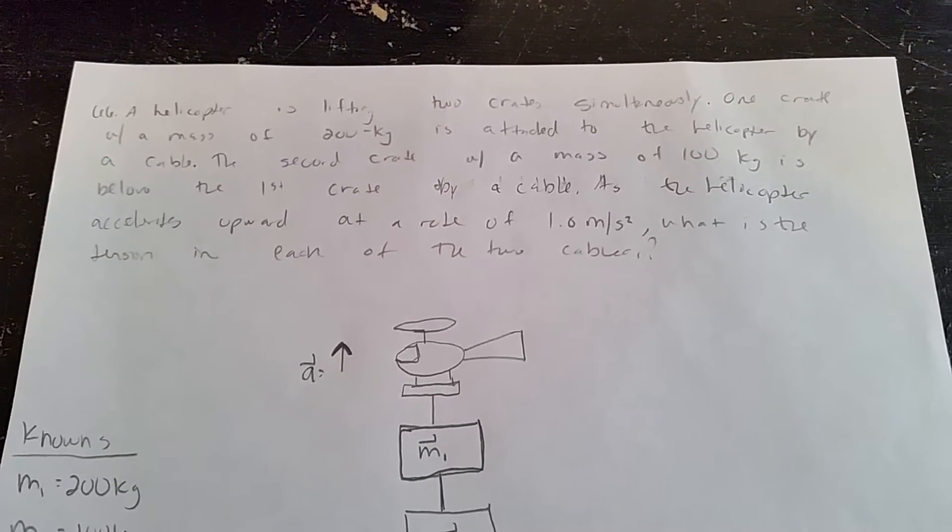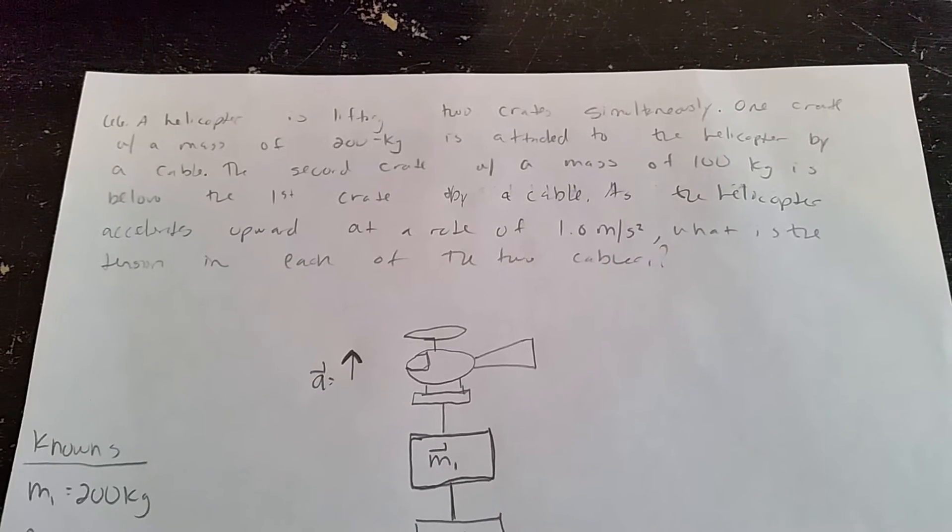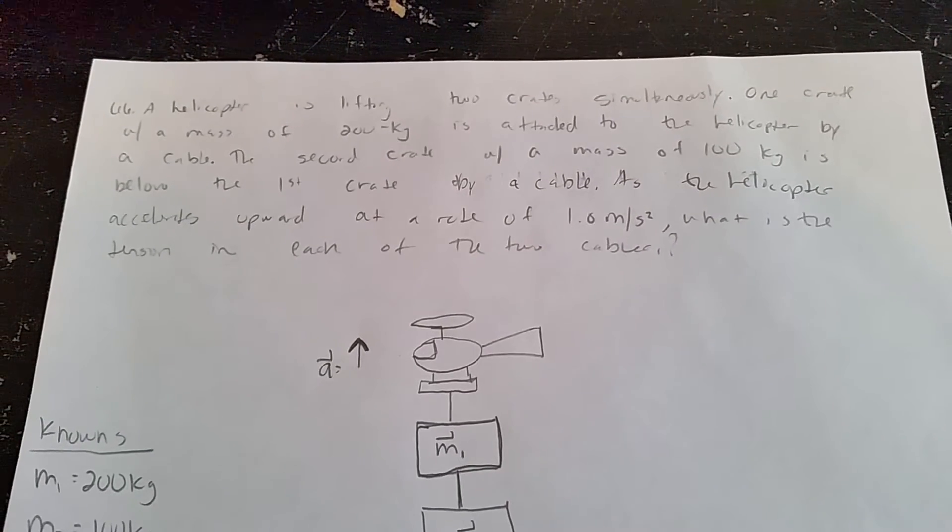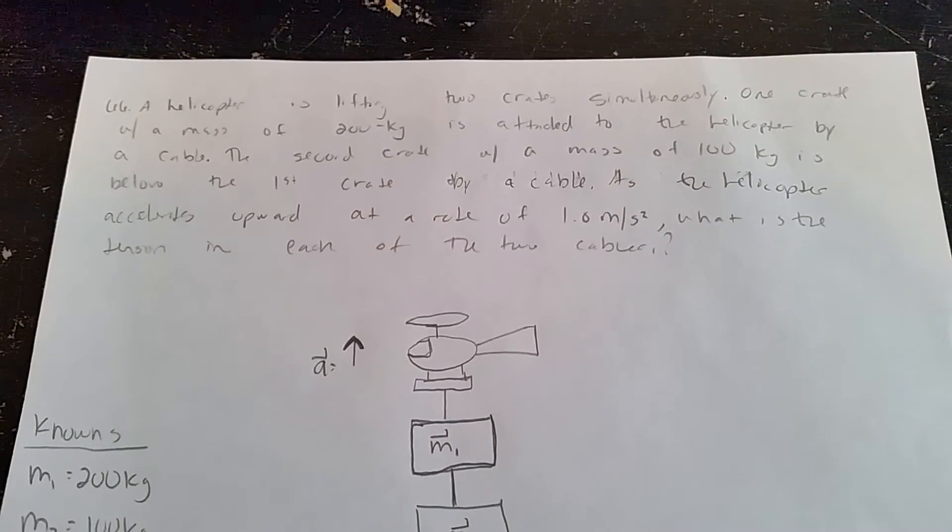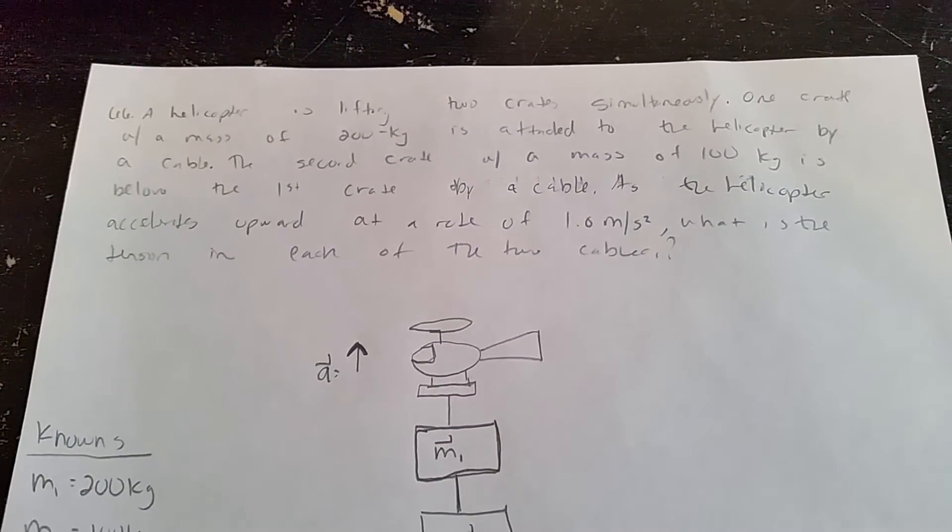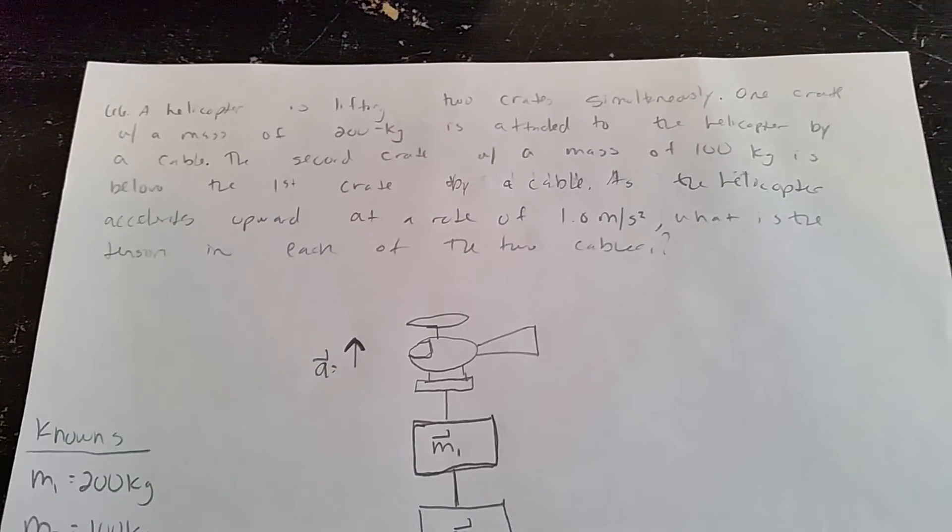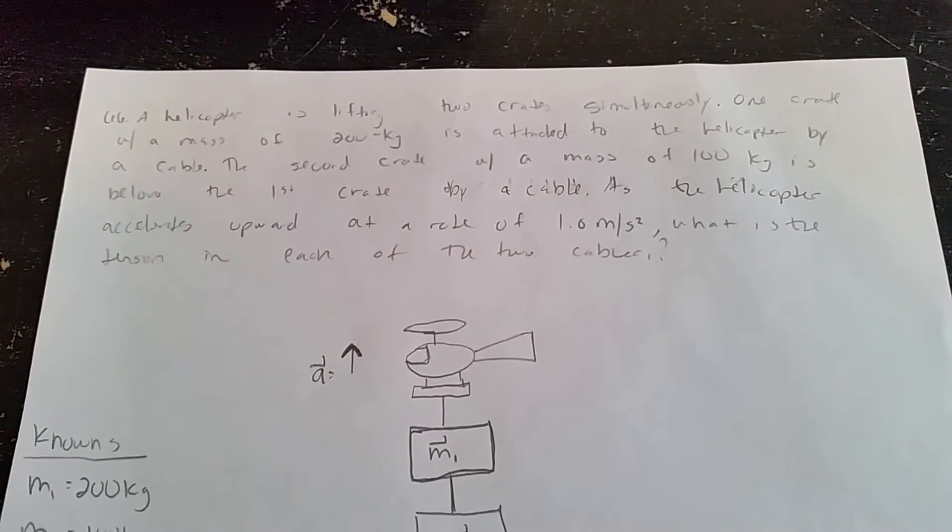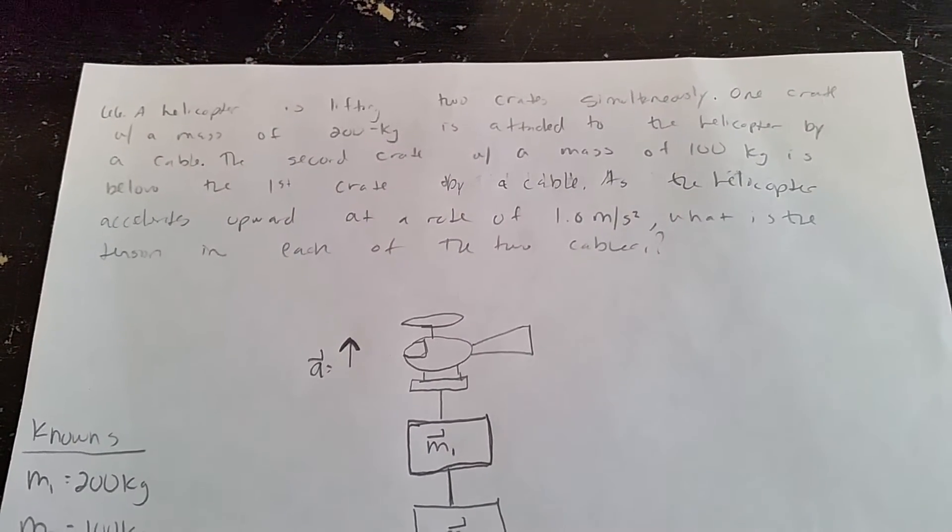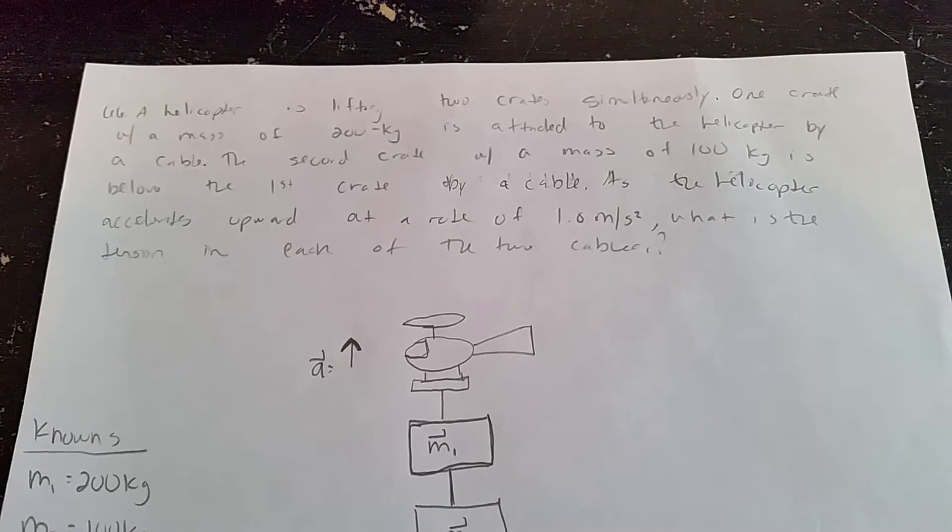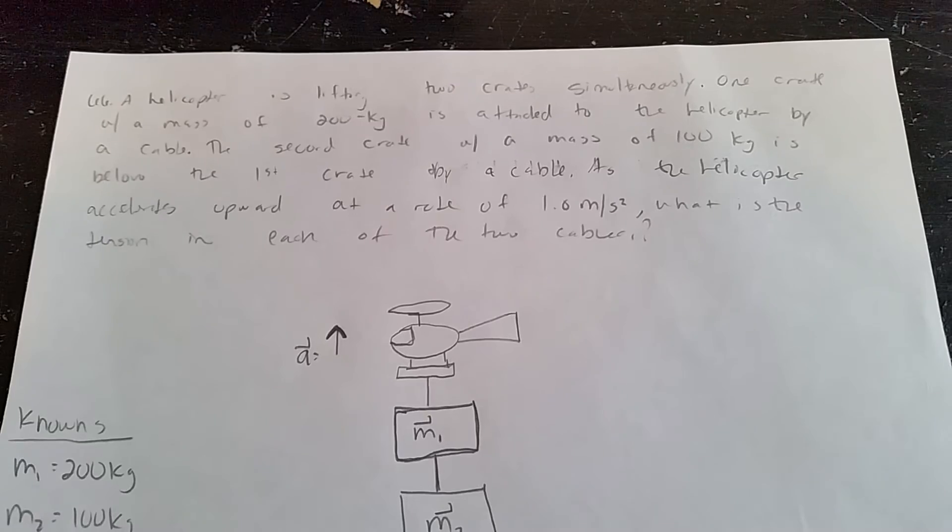Hi guys, this is my second reassessment attempt for Newton's second law and I chose number 66 from the book. The question states a helicopter is lifting two crates simultaneously. One crate with the mass of 200 kilograms is attached to the helicopter by cable. The second crate with a mass of 100 kilograms is below the first crate attached by cable as the helicopter accelerates upward at a rate of 1.0 meters per second squared.